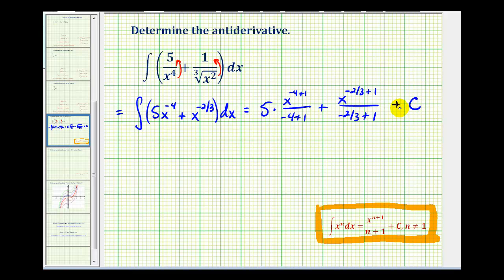Now let's go ahead and simplify this. Here we'll have five times, this will be x to the negative third, denominator is going to be negative three, plus negative two-thirds plus one, that's going to be x to the one-third divided by one-third, plus our constant of integration. And now we have one more step.